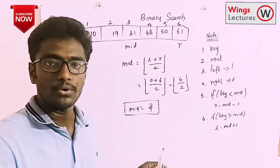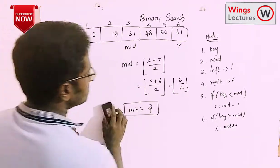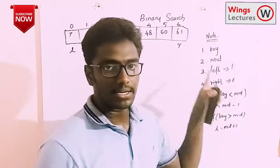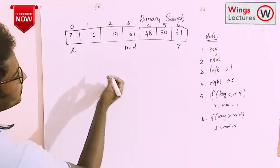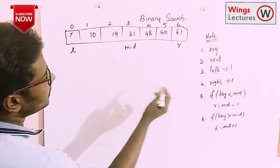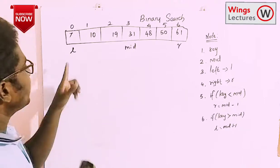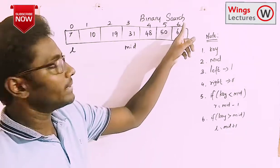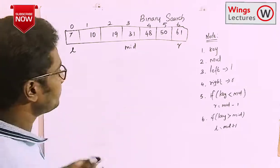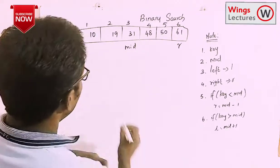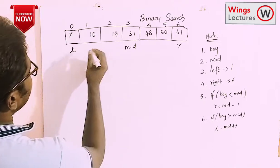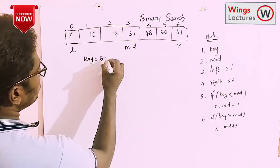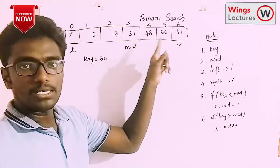Now let's start the problem. Initially, I'm taking L as zero, which is the starting index, and R as six, which is n minus one. I'm going to take the key value as 50 — I'm going to search for 50 from this array.